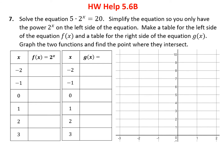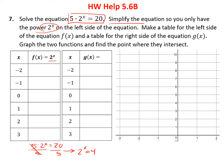Problem 7 asks us to solve 5 times 2 to the x equals 20. First, simplify so you only have 2 to the x on one side. Divide both sides by 5 to get 2 to the x equals 4. So we'll graph y equals 2 to the x and y equals 4. We could have graphed the original equation, but the graph would have been much bigger, so simplifying first makes it easier.